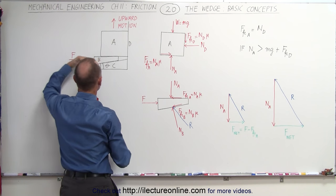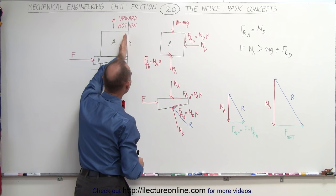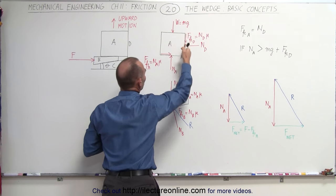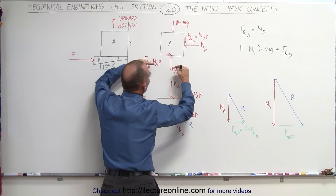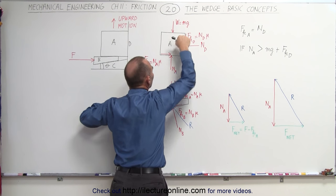As we're driving this wedge in here, we push object A into the surface at D. There'll be a friction between D and A, and so as you're trying to push the object A upwards, there'll be a friction force pushing downward as well.